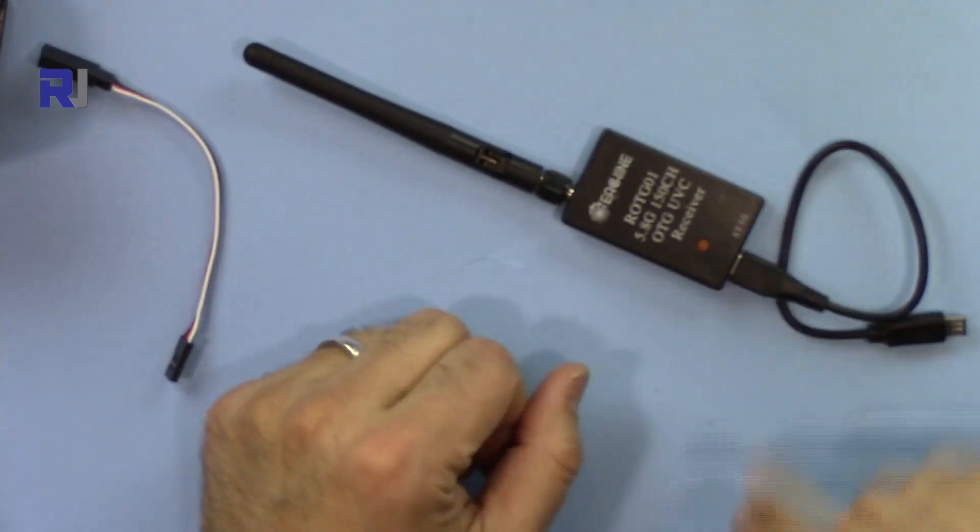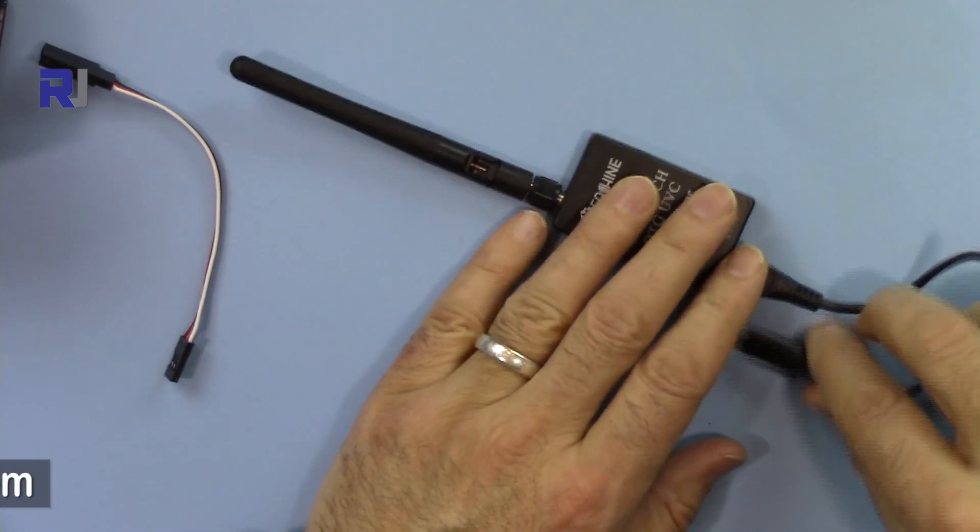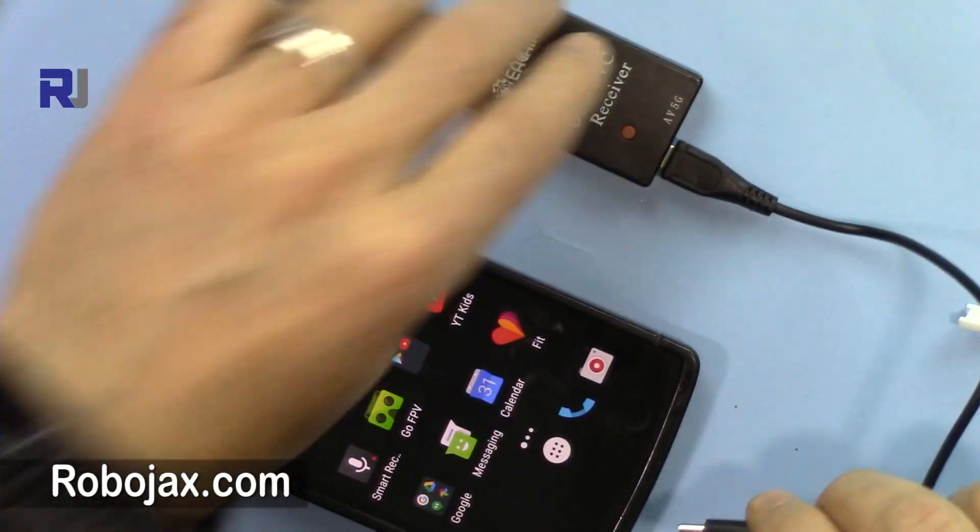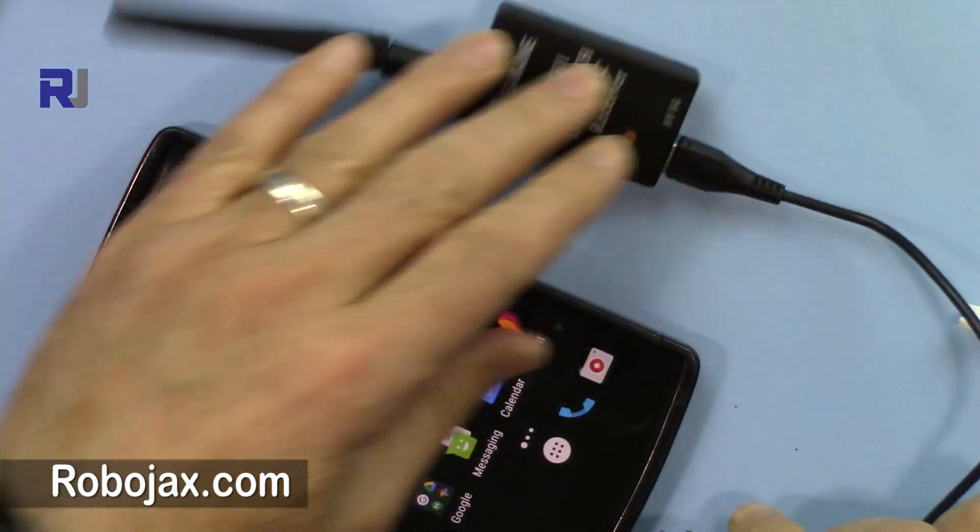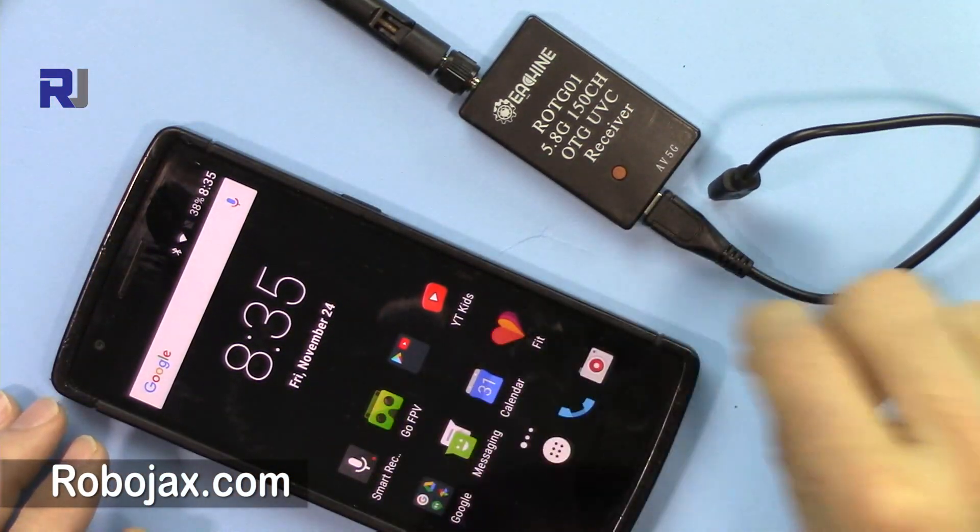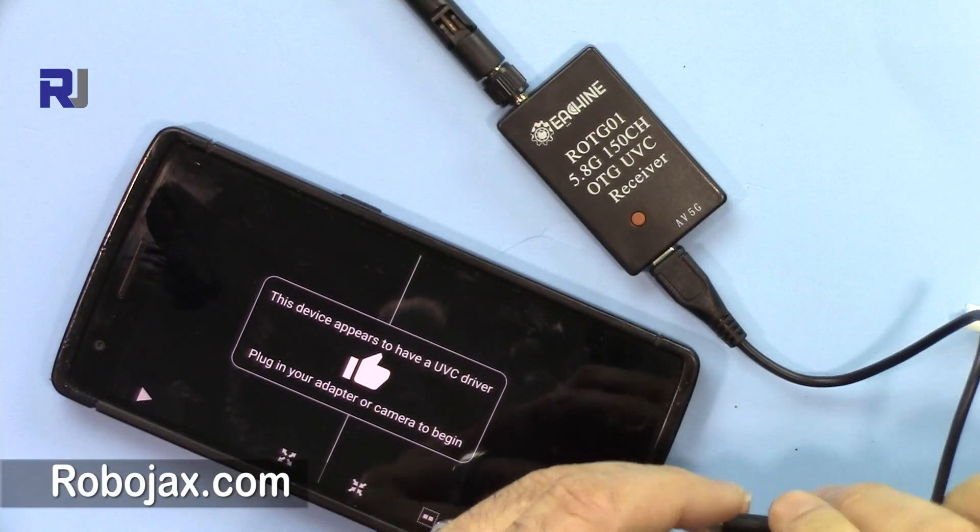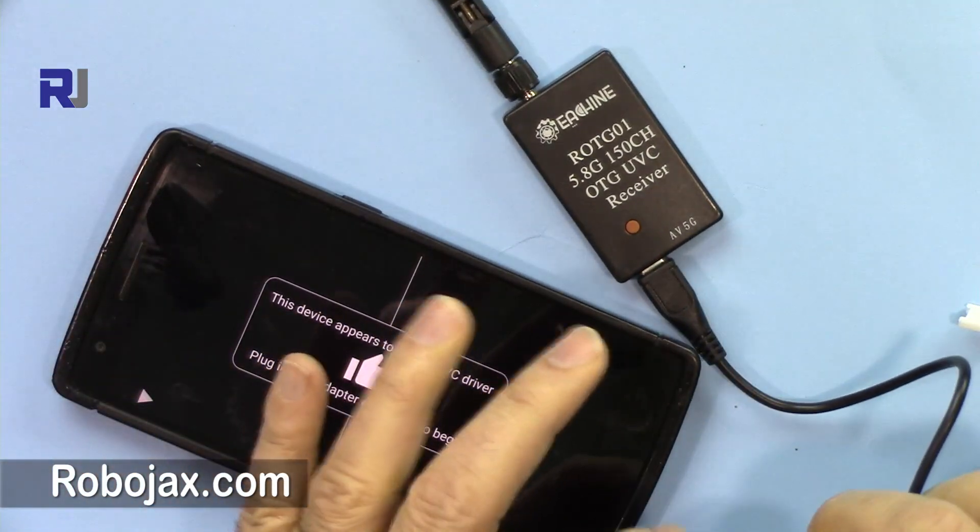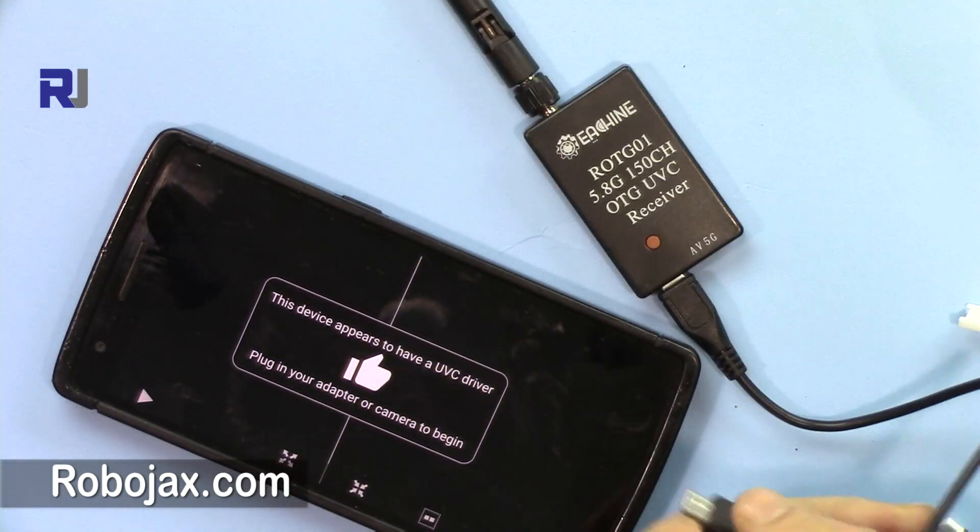So it doesn't need any power; the power will come from your phone. And then you connect. Now I'm just running the app and then plugging in the USB cable - the camera USB cable.